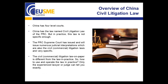China has four-level courts: the basic-level court, the middle-level court, the super-level court, and the Supreme Court of the People's Republic of China. China has a law named the Civil Litigation Law of the People's Republic of China that stipulates the basic and important rules of civil litigation procedure. But in practice, this law is not so specific, so we need more detailed rules and regulations. The PRC Supreme Court has issued and will issue numerous judicial interpretations, which are also civil and commercial litigation laws and are very complex and specific. The civil and commercial litigation law on paper is different from the law in practice — only an experienced lawyer or judge can tell you exactly how to use and operate the law in practice.